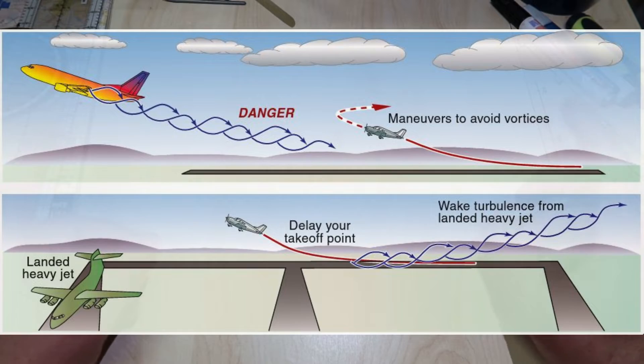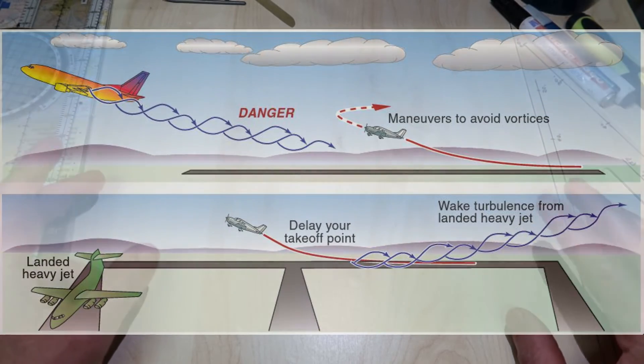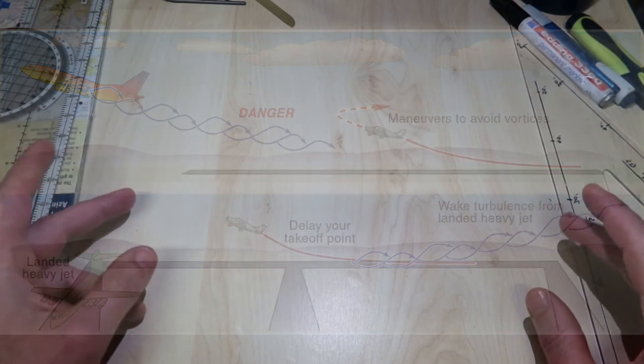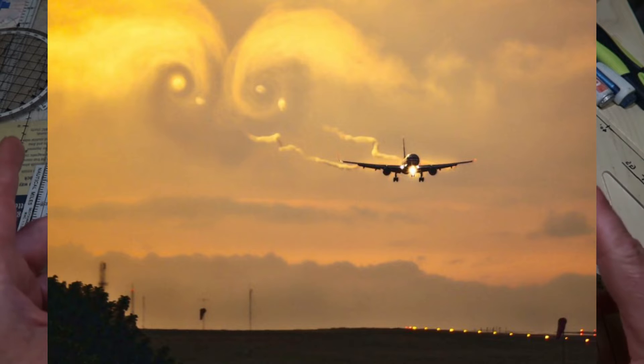On a fixed-wing aircraft, tip vortices form as the aircraft rotates and end as the nose wheel is lowered on landing.